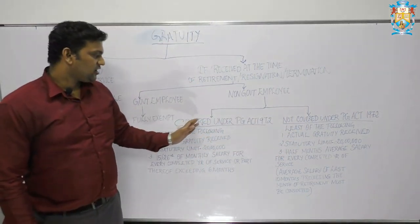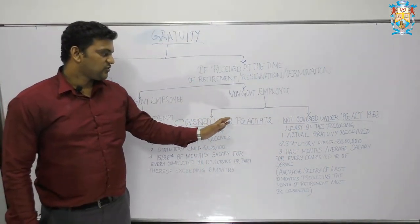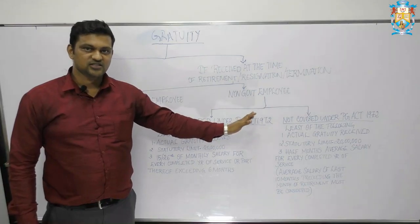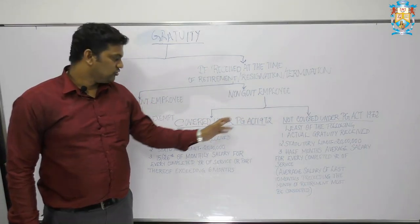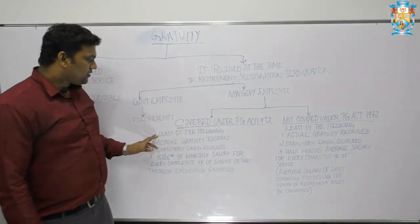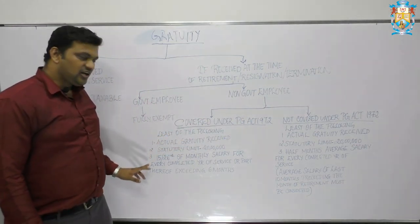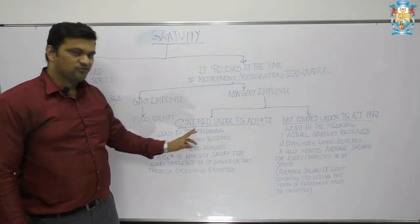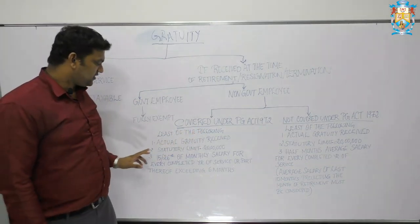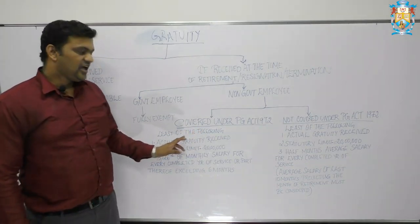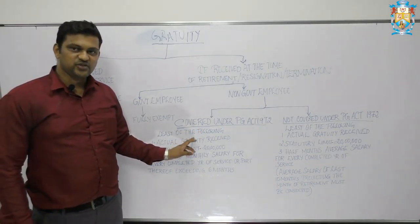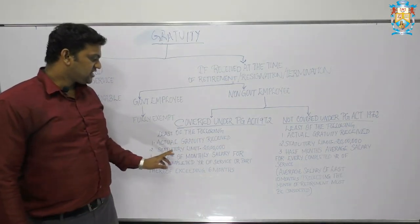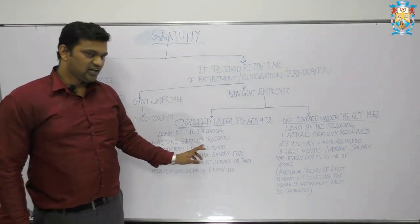Under the Payment of Gratuity Act 1972, there are three conditions and we take the least of the following. The first one is actual gratuity received. The second one is the statutory limit of 20 lakhs.